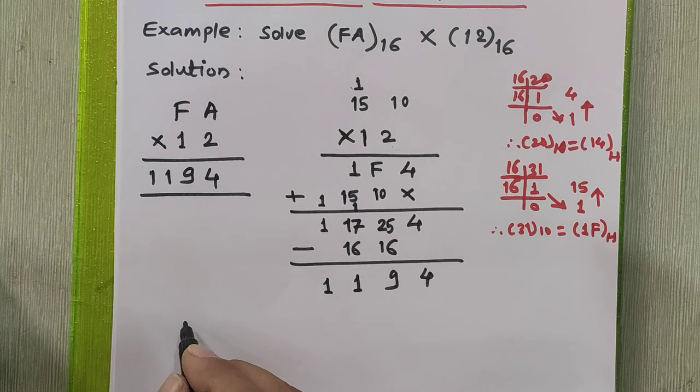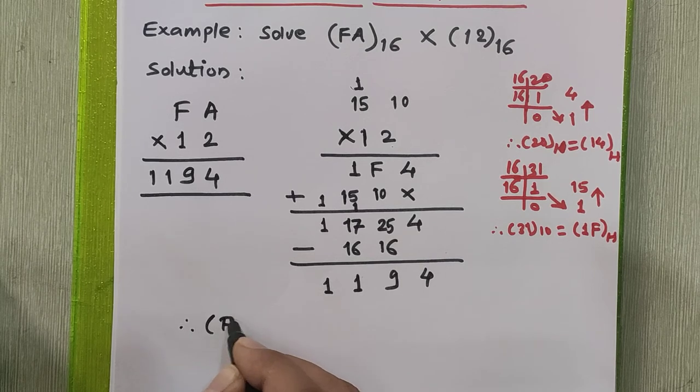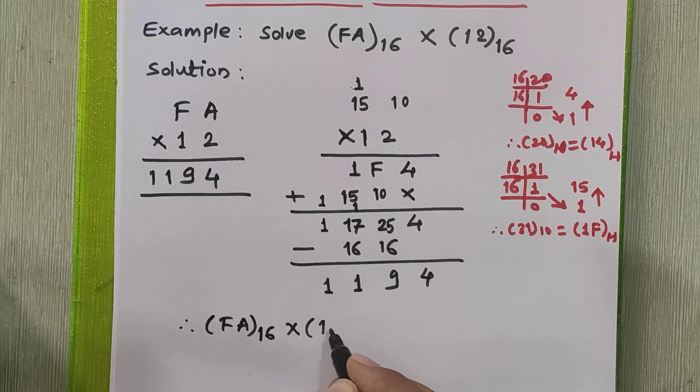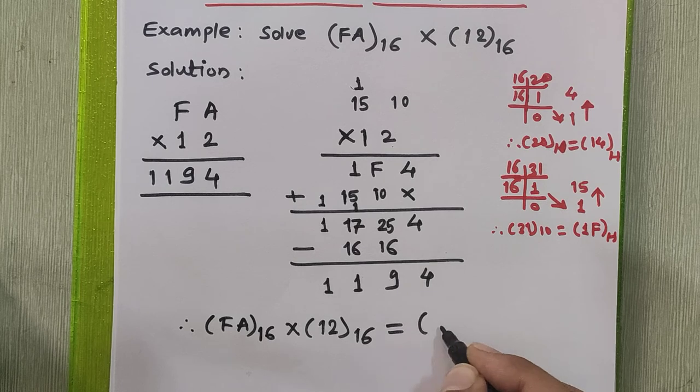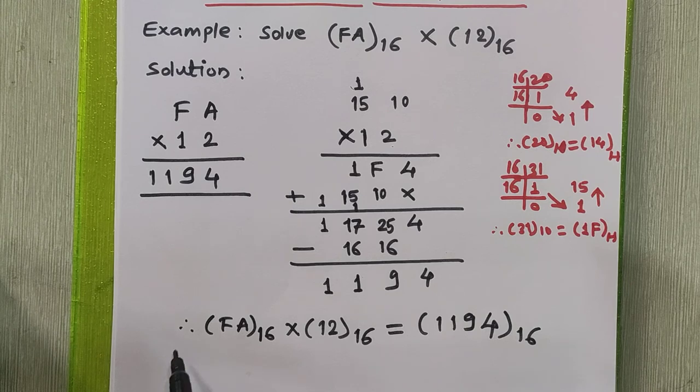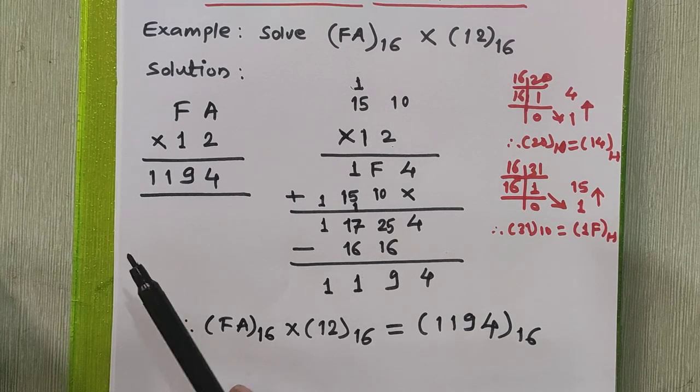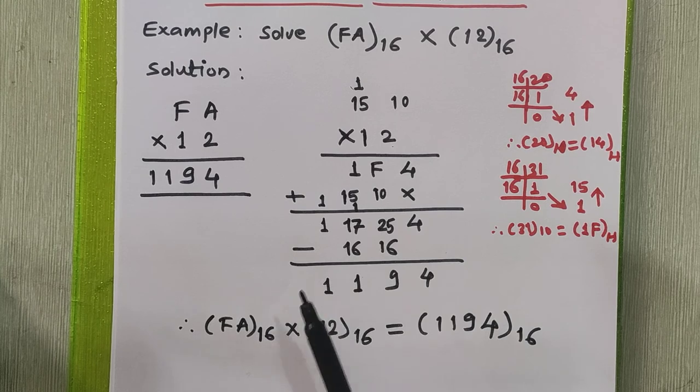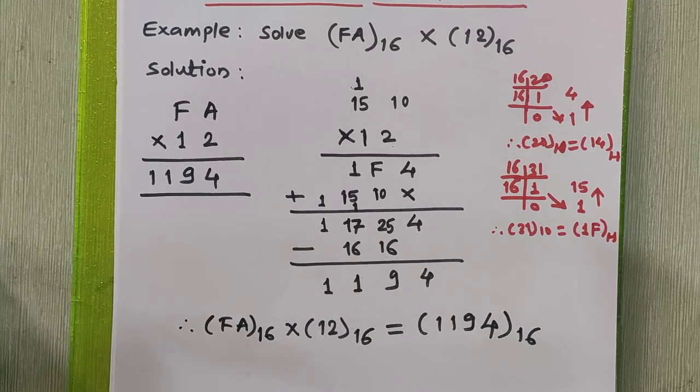Therefore, we can say that FA to the base 16 into 12 to the base 16 equals 1194 in hexadecimal. So this way we can perform multiplication of any two hexadecimal numbers directly without converting to any other base.